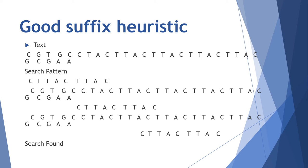Next is good suffix heuristic. The text and search pattern are given. The search pattern checks with the text and moves forward if the search is not found. Here the search pattern is placed at the value C but the search is not found, so it moves forward again. When the first element in the search pattern matches with the element in the text, the search C T T A C T T A C is found. This is about good suffix heuristic.